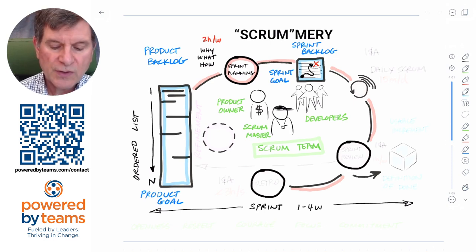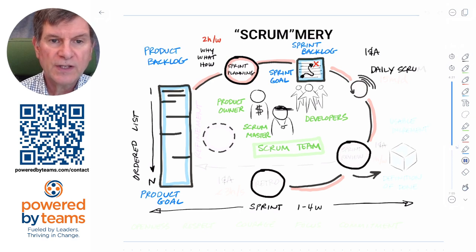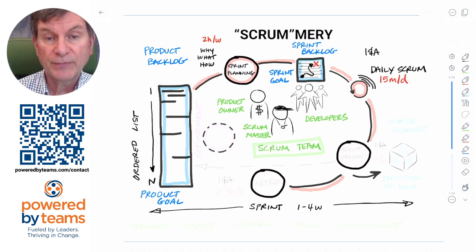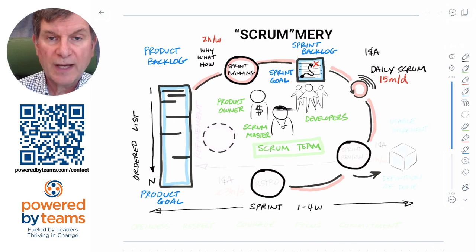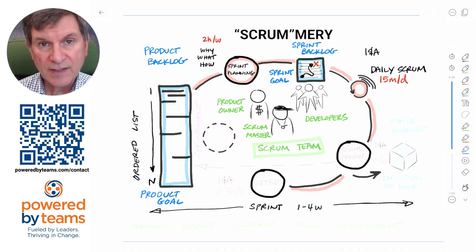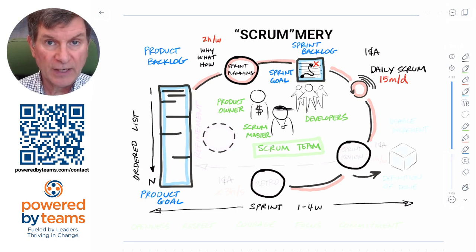Scrum is also a set of nested inspect-and-adapt loops — one focused on the process, one focused on the product. The tightest of these is the event known as the daily Scrum, which is a 15-minute per day planning meeting. It's there for the developers to inspect their progress towards the sprint goal and to adapt their plans for the next day's work. You can get status by listening in, but that's not the purpose — it's actually a planning meeting.